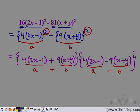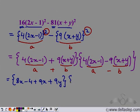Now let us simplify this. We get four times two x is eight x minus four plus nine x plus nine y. For the second bracket: eight x minus four minus nine x minus nine y.